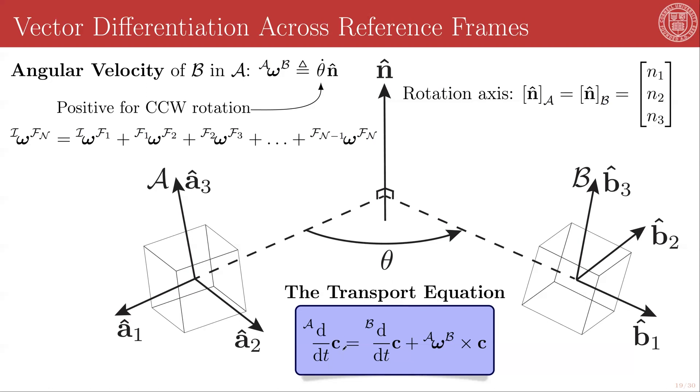What it says is that for any pair of frames A and B, as long as you can write down the angular velocity of B in A, then for any vector C, and this C vector can be anything. It can be a position vector, it can be a velocity vector, it can be an acceleration, it can be whatever you want. For any vector C, the A frame derivative of C is going to be equal to the B frame derivative of C plus A omega B crossed with C.